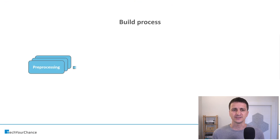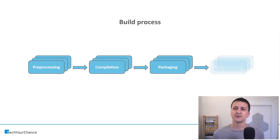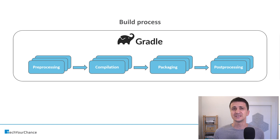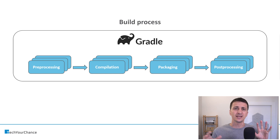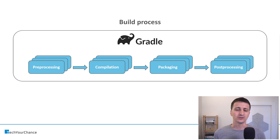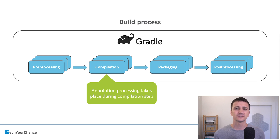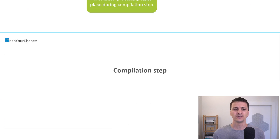Now the build process itself consists of multiple steps. It starts with pre-processing, then compilation, then packaging, and finally post-processing. Gradle build system orchestrates all of that. Each of these steps is actually a number of sub-steps, so you can double-click on each of them and go into the details. Annotation processing takes place during the compilation step, so let's double-click on that.